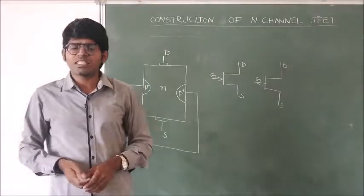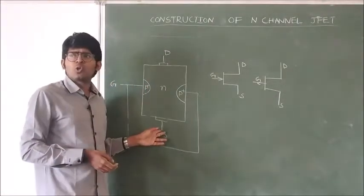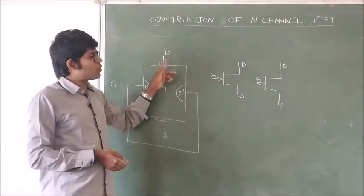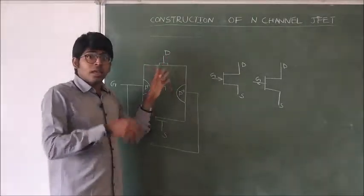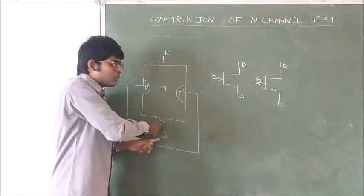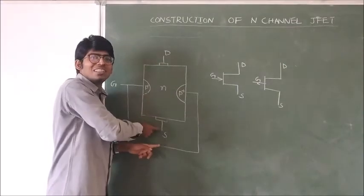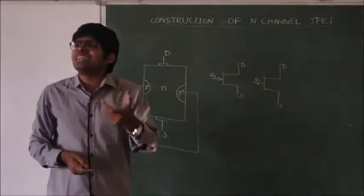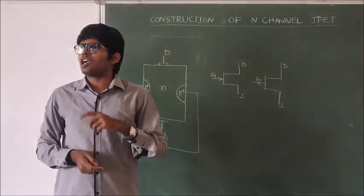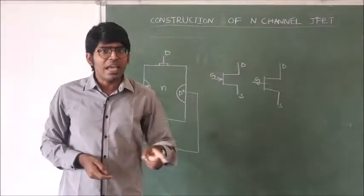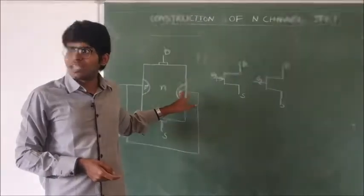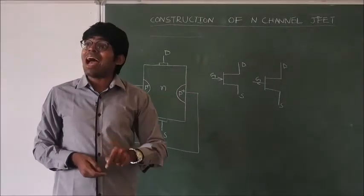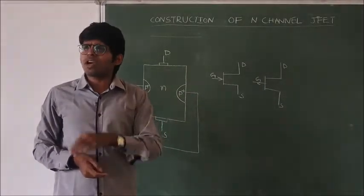What does interchangeable mean? If you give a negative supply to the source terminal, you can instead give the same negative supply to the drain terminal — nothing to worry. The electrons will flow from one region to the other regardless. So source and drain terminals can be interchangeable, which is not possible in the BJT, and this interchanging is also not possible at higher frequencies.